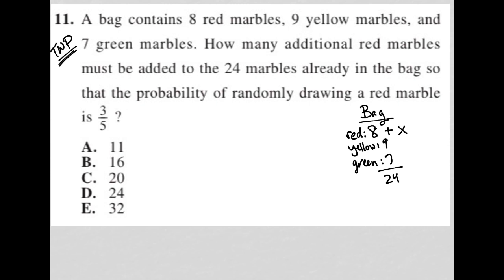So on this test, anytime I see this word probability, I am going to think, probability represents a fraction where the numerator is what I want and the denominator is what I have. Or another way to think about what I have is what am I choosing from? So again, how many additional red marbles must be added to the 24 marbles already in the bag so that the probability of randomly drawing a red marble...